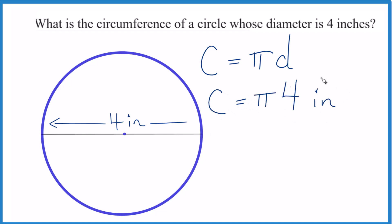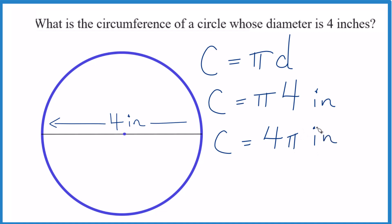We'll keep the units in here so we don't forget. We could write this as circumference equals four pi inches, and that would actually be correct — some teachers would accept that. But others want you to multiply four times the value for pi, like this.